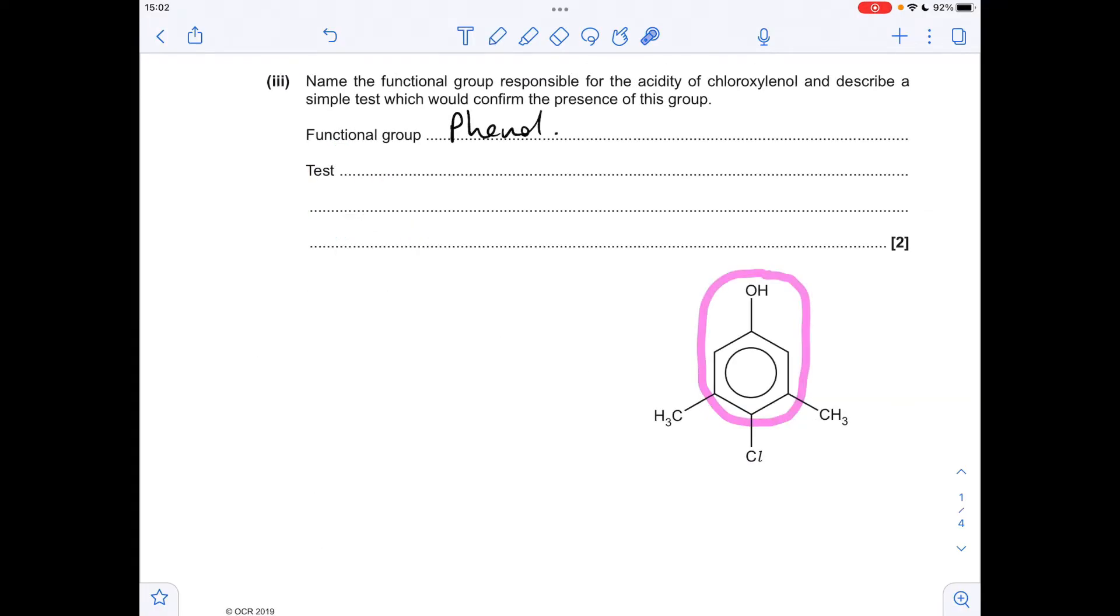Next part, so the functional group in the molecule is the phenol group. We've got this hydroxyl group directly bonded to the benzene ring. So how would you test for that? Well, you could measure the pH and it should be less than 7 because phenols are weakly acidic. But then you would need to show that it's not a carboxylic acid because they also have a pH less than 7. So if you add sodium carbonate, you won't see any bubbles of CO2 produced.